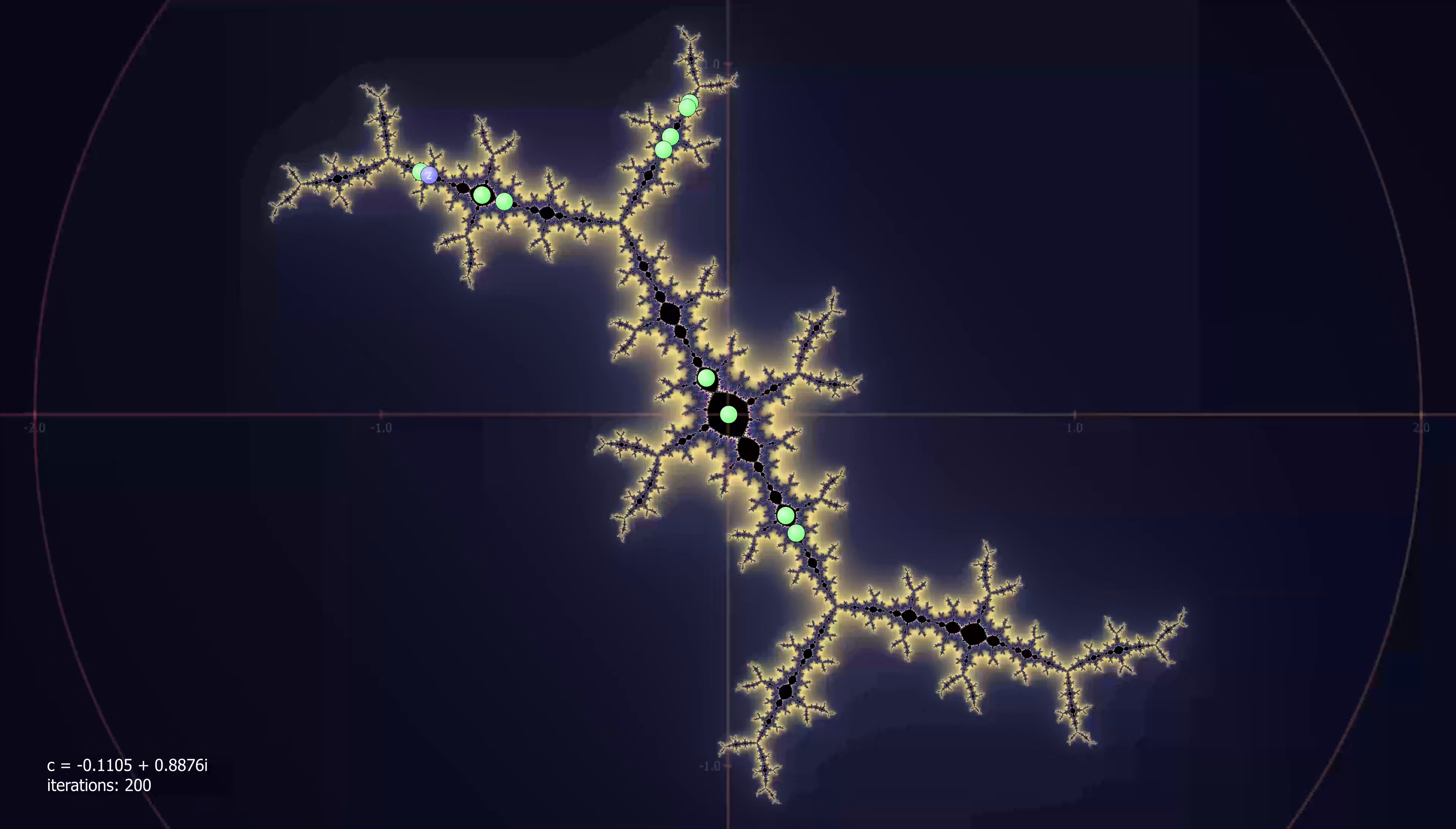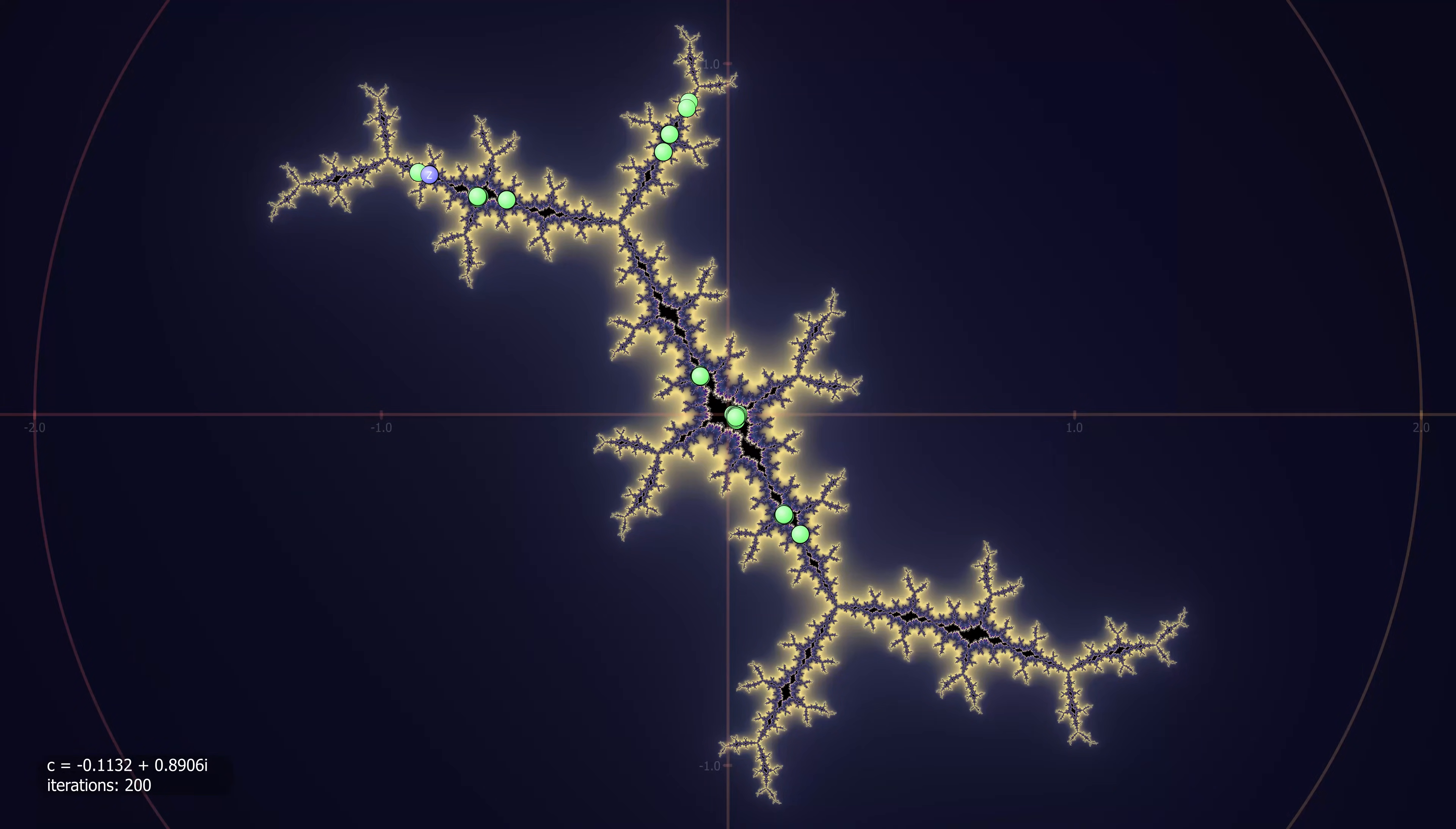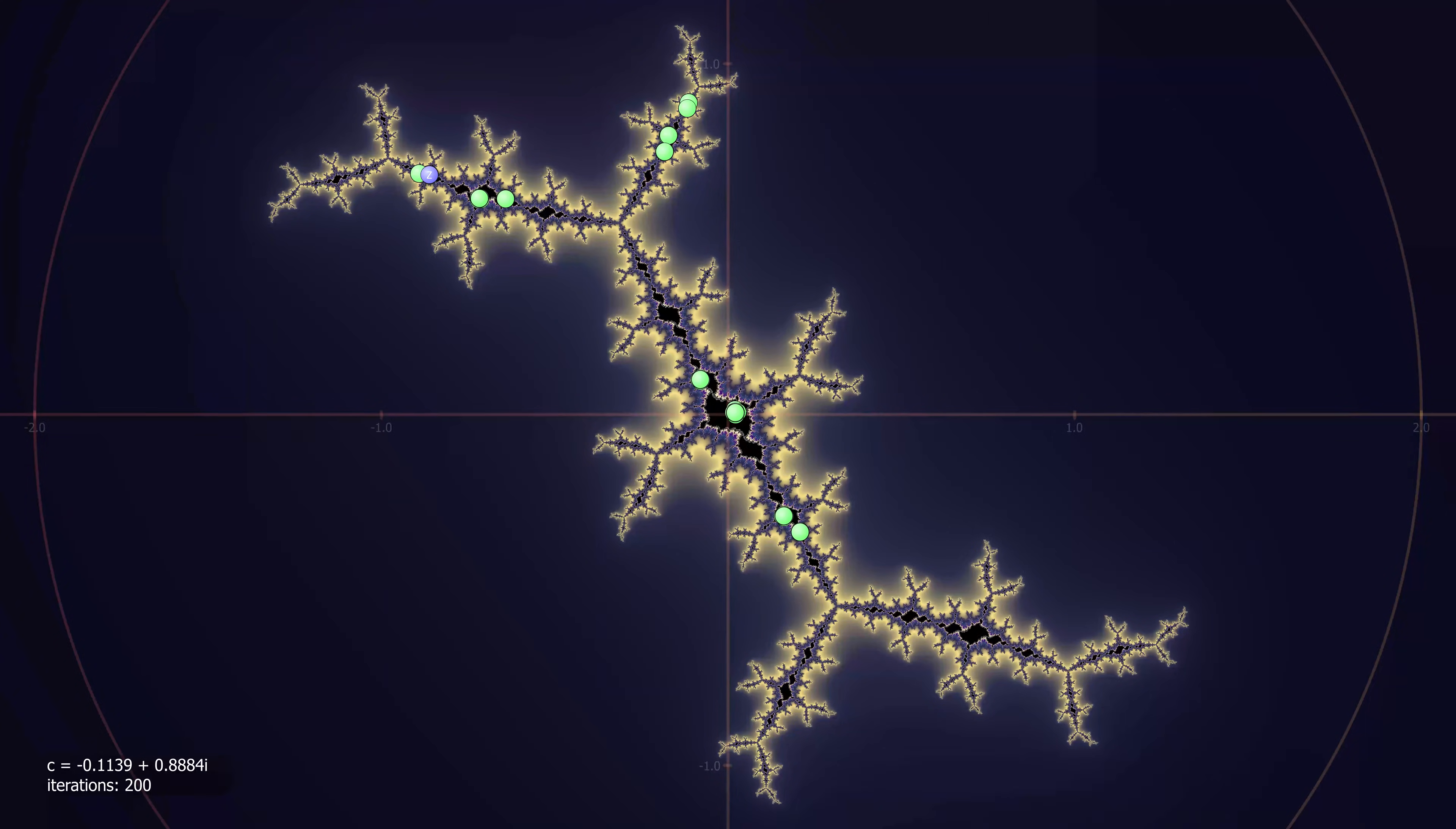The Julia set still has 3 branches, so that is why the signpost above the bulb also has 3 branches. The 3 branching pattern remains beyond the original bulb.